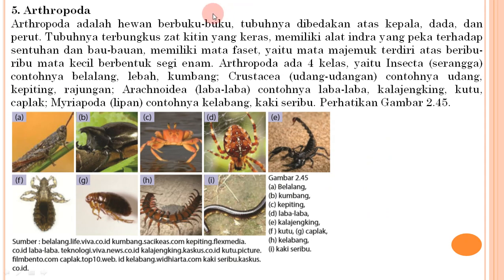Kelima, Arthropoda: hewan berbuku-buku, tubuhnya dibedakan atas kepala, dada, dan perut; terbungkus zat kitin yang keras; memiliki mata majemuk (mata faset) terdiri atas beribu-ribu mata kecil berbentuk segi enam. Arthropoda ada empat kelas: Insekta (serangga) contoh belalang, lebah, kumbang; Crustacea (udang-udangan) contoh udang, kepiting, rajungan; Arachnoidea (laba-laba) contoh laba-laba, kalajengking, kutu; dan Myriapoda (lipan) contoh kelabang dan kaki seribu.